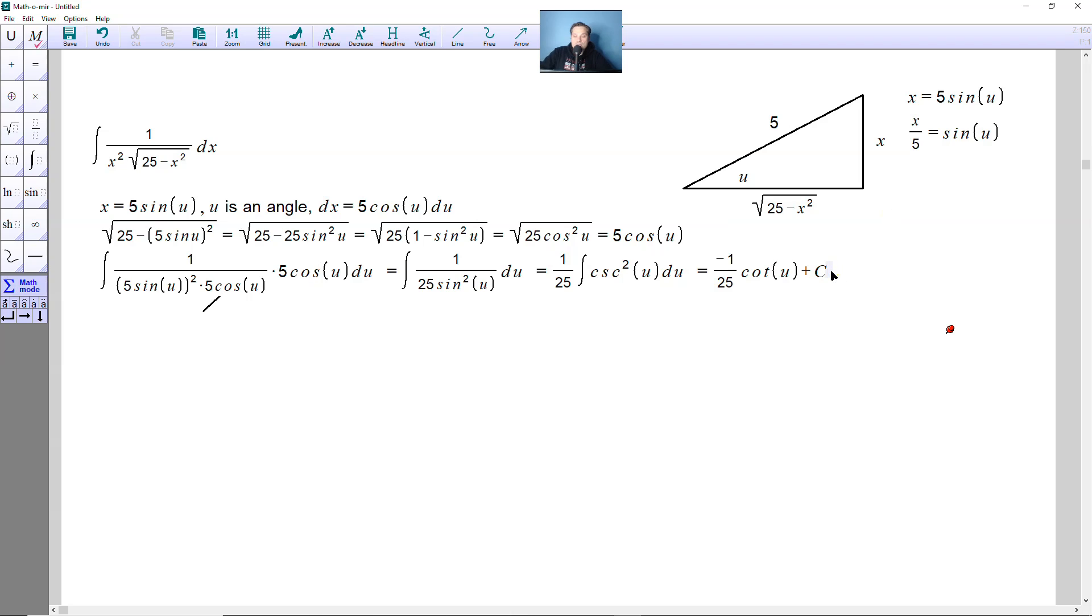Which means that below, to make use of that, it's going to become now negative 1 over 25th. And cotangent of u would be the root of 25 minus x squared divided by x. That's the definition of the cotangent function. So this here, in other words, would be now 25 minus x squared over x. Plus c. And then this is the answer.